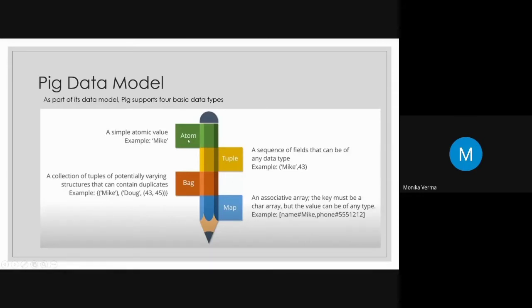Atoms are a simple value — it can be a character or an integer. So a constant value is called an atom. And if we go further, there is the tuple.